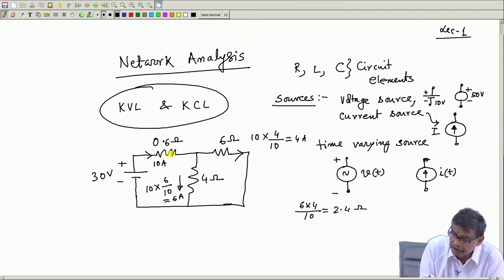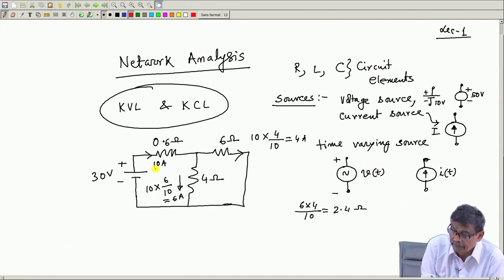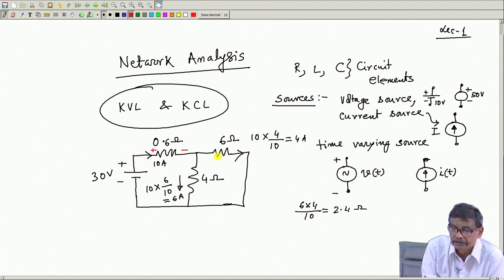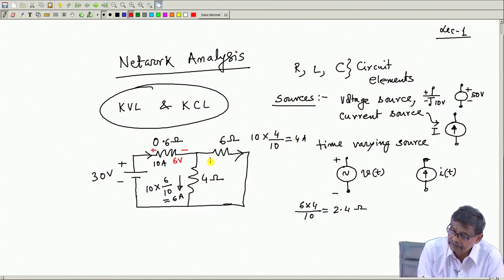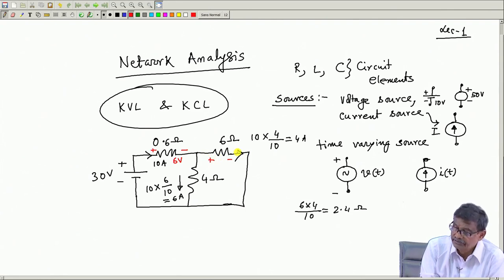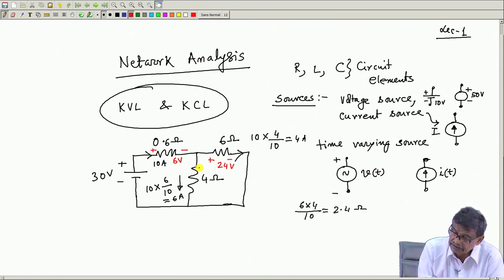The voltage drop across the 0.6 ohm resistance is 0.6 × 10 = 6 volt, with plus on the left and minus on the right since current flows left to right. The voltage drop across the 4 ohm resistance is 4 × 6 = 24 volt, and similarly the voltage drop across the 6 ohm branch is also 24 volt.